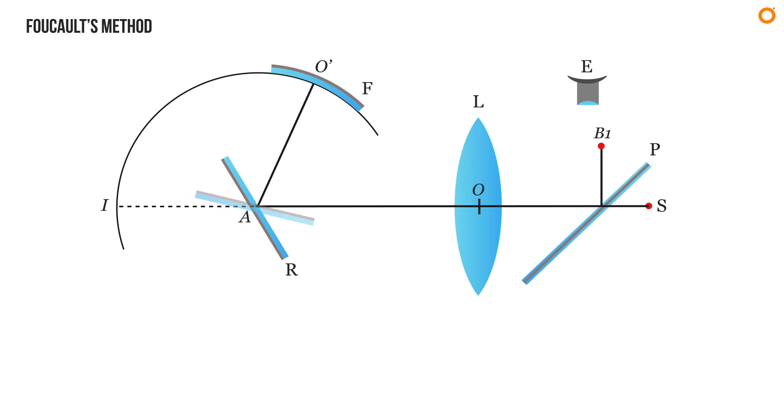Now if the plane mirror R is rotated rapidly at a uniform angular speed about an axis passing through A, then the ray after reflection from concave mirror F finds the plane mirror displaced by an angle theta to a new position R'.